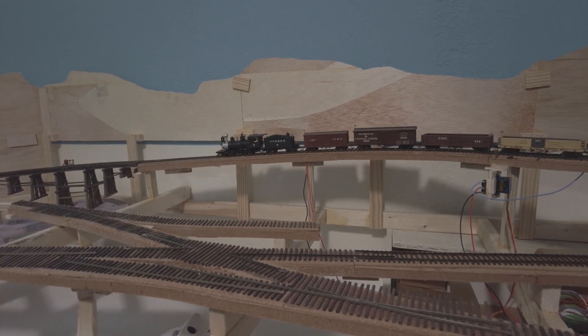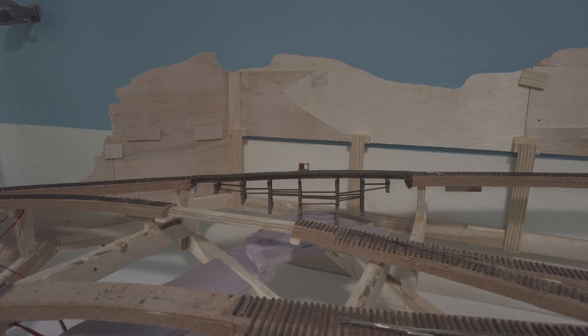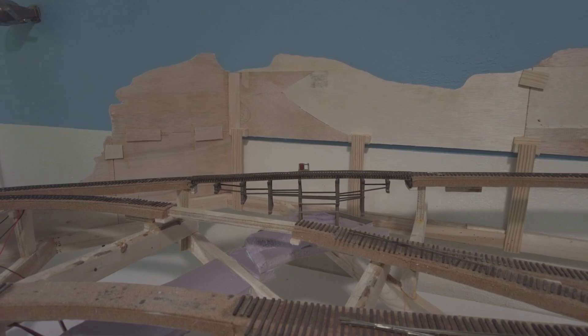Going counterclockwise, we're entering Colorado. The trestle here has been on the previous two versions of the Canadian City and Southern Railroad. It crosses the Wermaha River on this layout.